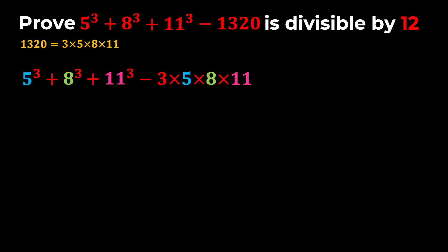So I'm going to replace 5, 8, and 11 with ABC accordingly. So A equals 5, B equals 8, and C equals 11. And we want to prove that A cubed plus B cubed plus C cubed minus 3ABC is divisible by 12.